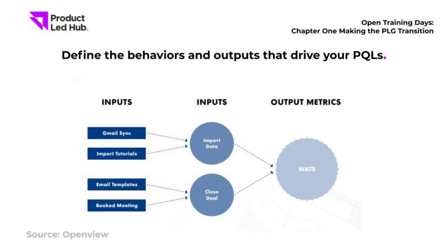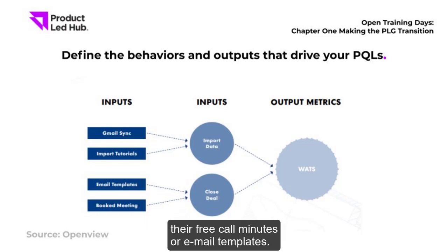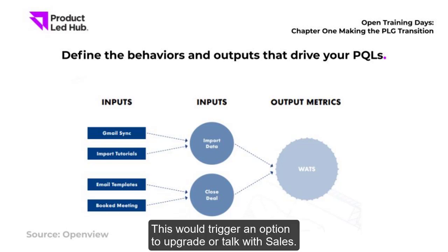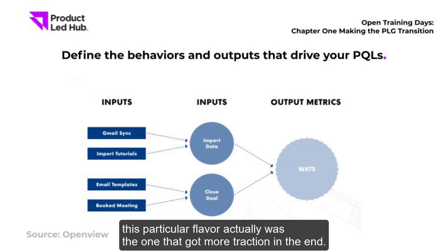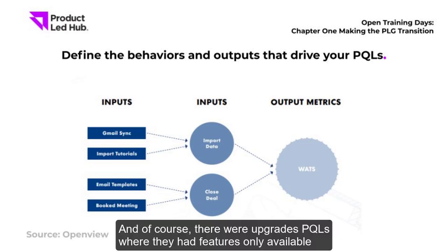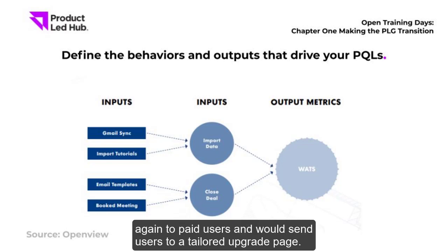Usage PQLs were triggered based on product usage — for example, when users exhausted their free call minutes or email templates, an option to upgrade or talk with sales was triggered. This PQL flavor actually got the most traction in the end. And of course, there were upgrade PQLs, where features available only to paid users would send users to a tailored upgrade page.